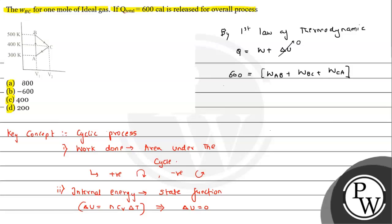A to B is an isochoric process, so work done is zero since P·ΔV = 0 (volume doesn't change). For B to C, volume and temperature vary linearly, so pressure is constant — meaning it is an isobaric process. For an isobaric process we use the formula W = nRΔT.